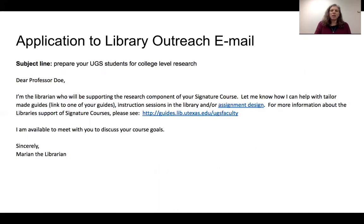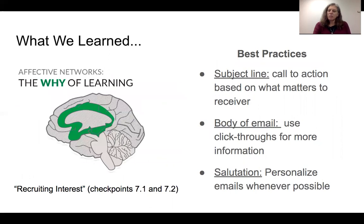Here's a close-up view of what our email ended up looking like — it's a lot shorter, and these emails are also in the Google Drive. The first thing we did was use the marketing principle 'make the email subject line a call to action based upon what matters to the receiver,' which aligns with the UDL checkpoint 'optimize relevance, value, and authenticity.' We changed the subject line from the passive 'Library Services for Your UGS Course' to 'Prepare Your UGS Students to Do College-Level Research,' because we know these faculty want to prepare their students to do well in college — that resonated with their values.